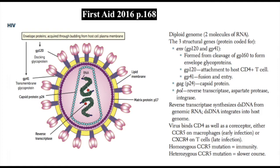Reverse transcriptase is an enzyme encoded by the genome. It synthesizes double-stranded DNA from RNA, and that double-stranded DNA then integrates into the host genome. The three structural protein genes to know are ENV, which encodes GP120 and GP41; GAG, which encodes P24; and POL, which encodes reverse transcriptase.